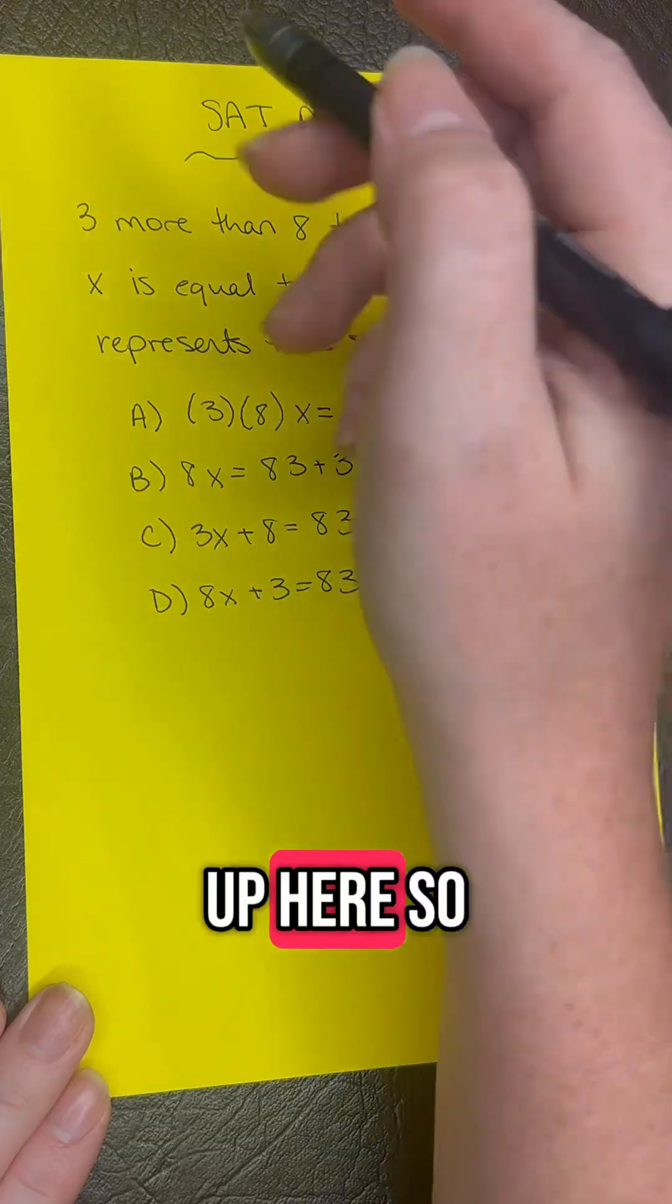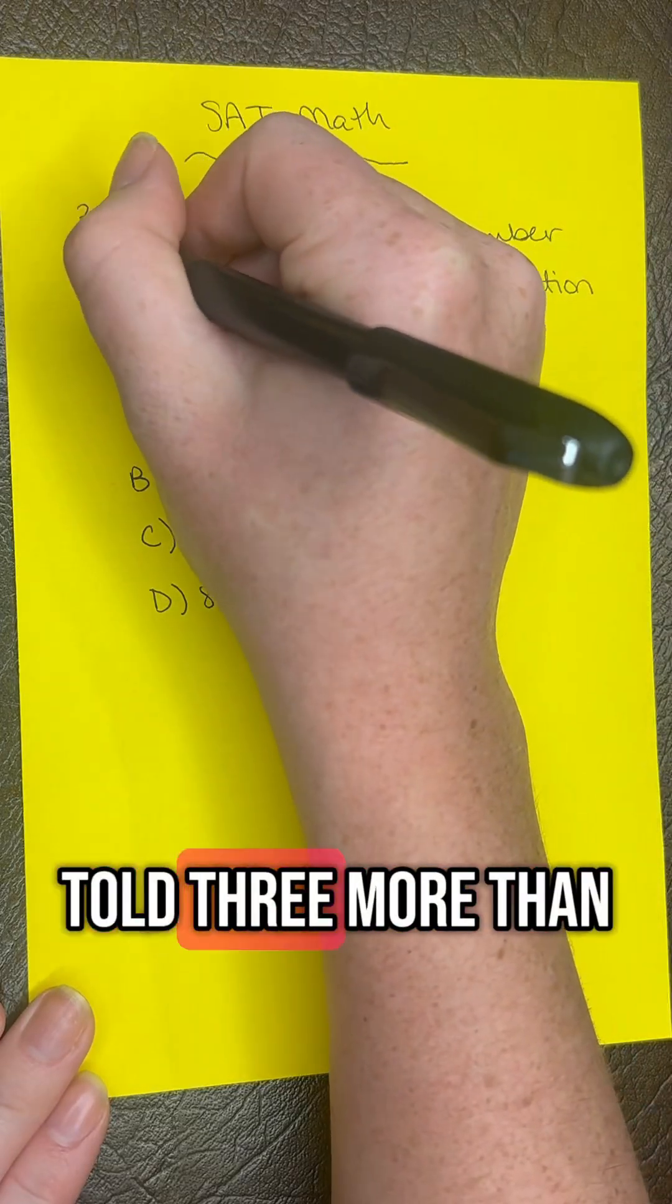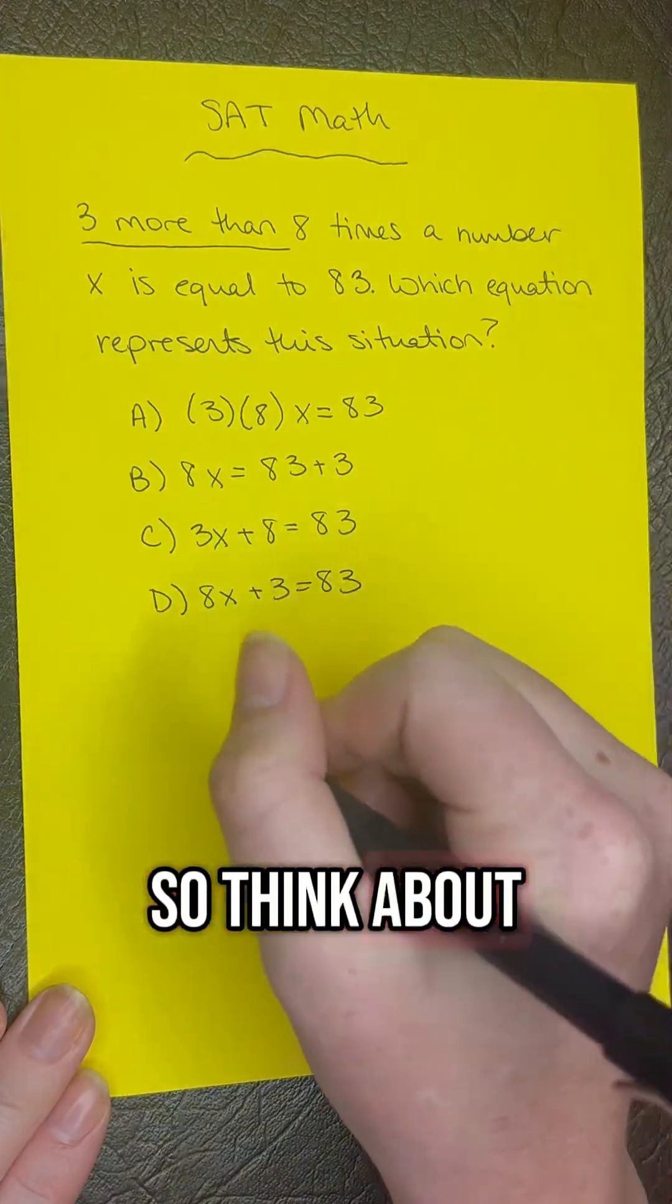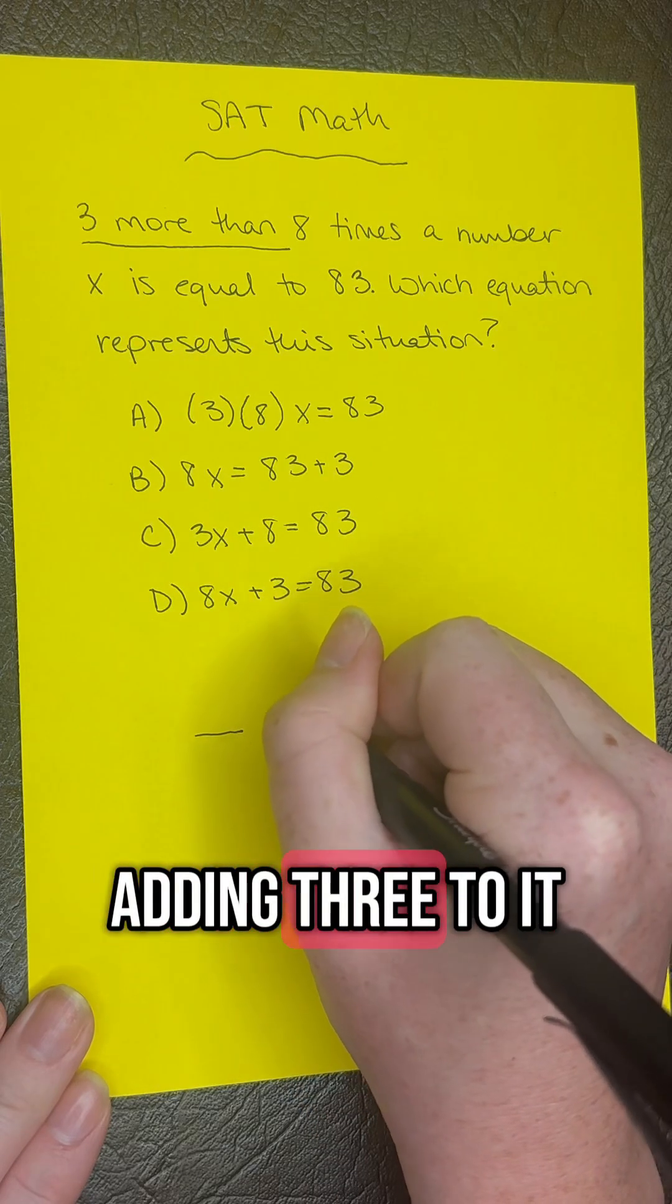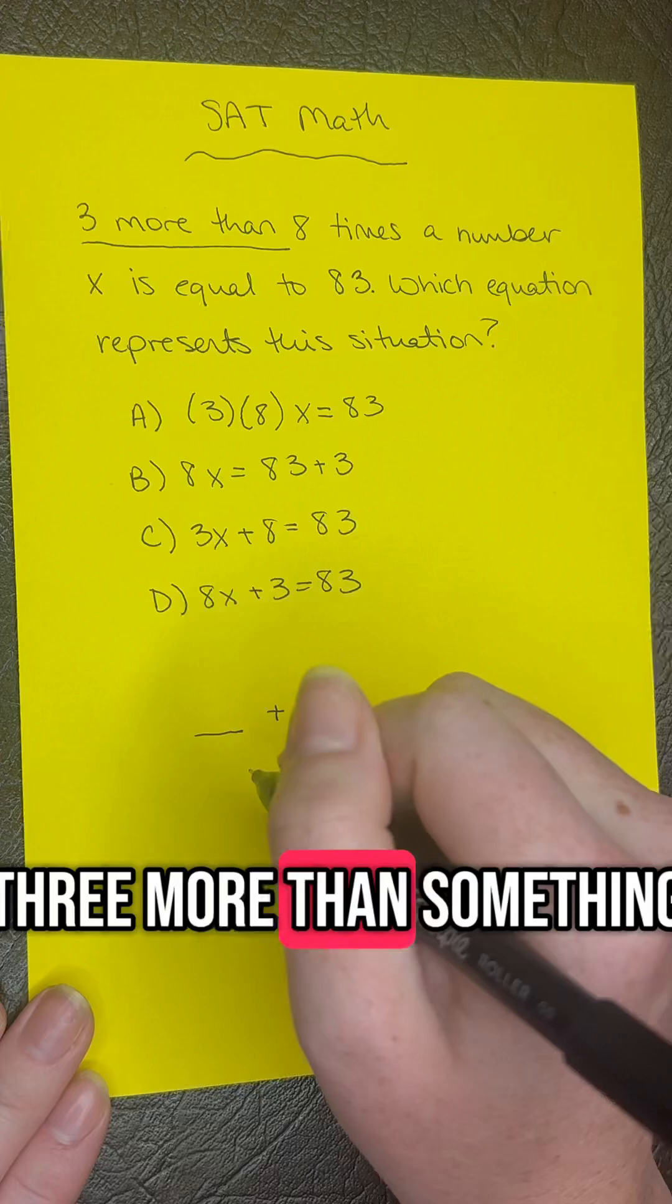So let's start up here. So we first are told three more than. So think about that as we have something and then we're adding three to it because we have three more than something.